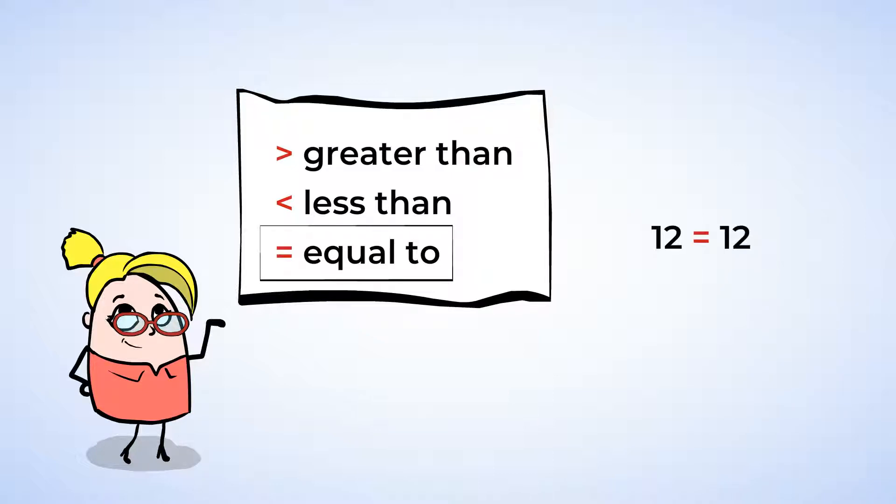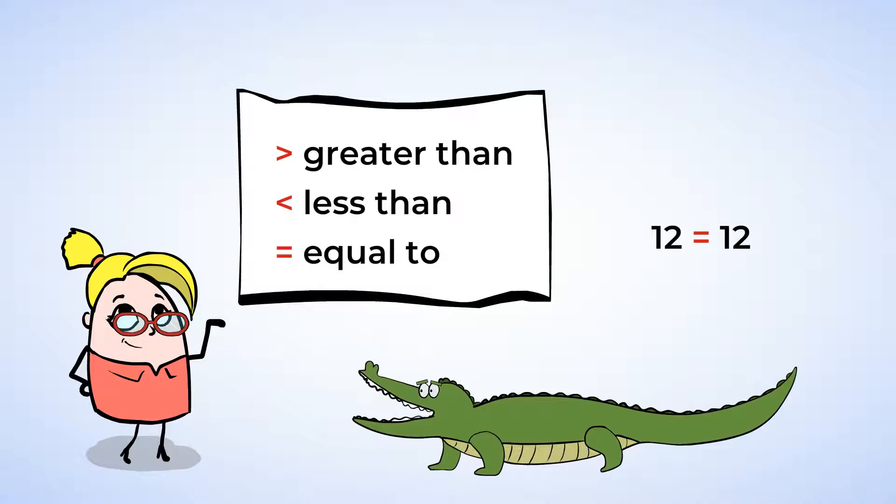Greater than and less than look like little mouths. You can imagine that they're the mouths of an alligator. And all alligators like to eat, so it always eats the bigger number. And when I say the bigger number, I don't mean the size of the number is bigger. I mean that it's more than the other number. Let's see how that works.